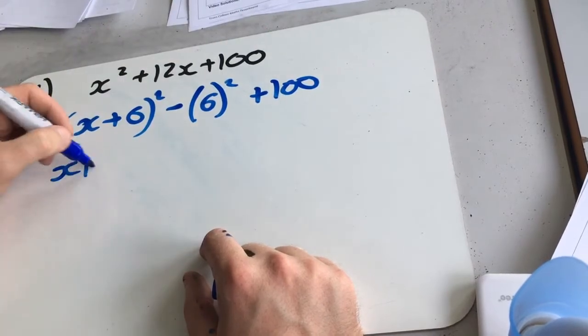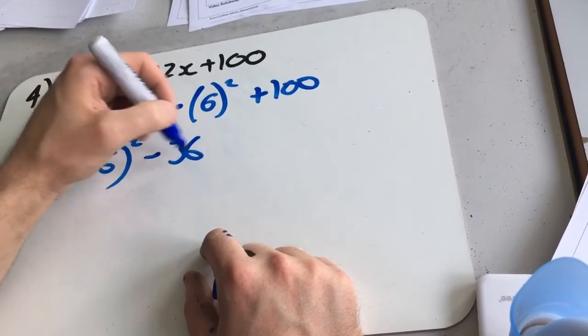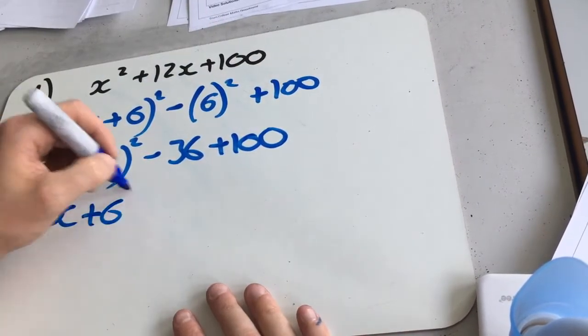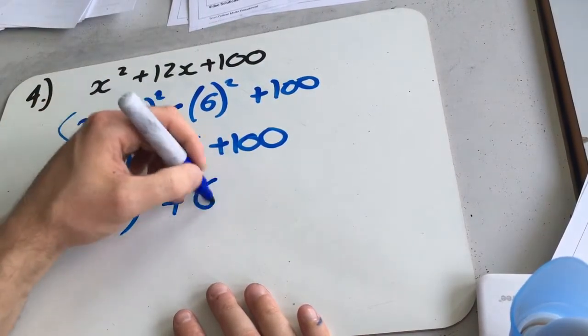So x plus 6 squared, take 36, plus 100, which is x plus 6 squared plus 64.